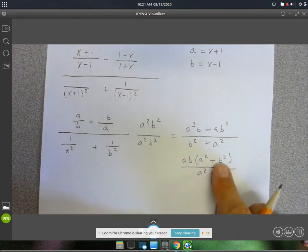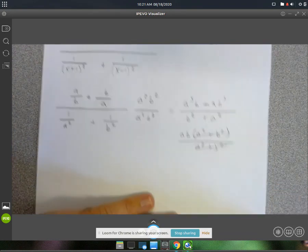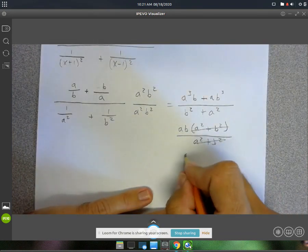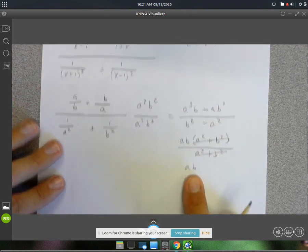So now, I can go ahead and cancel those two factors. And we're left with a b for our answer.